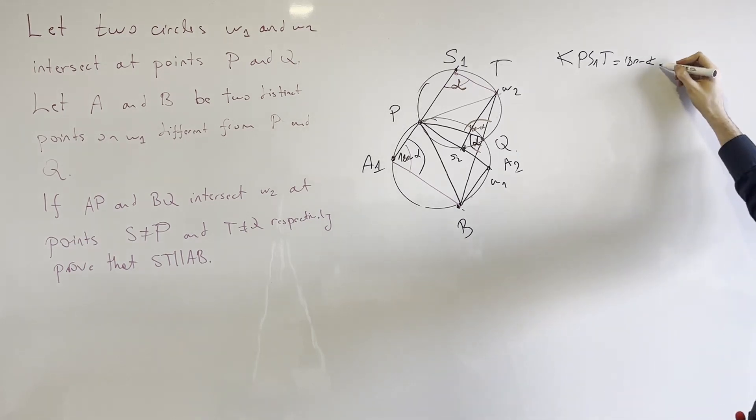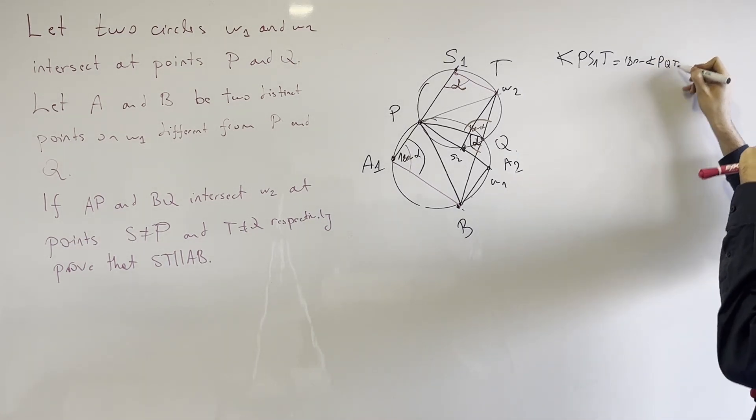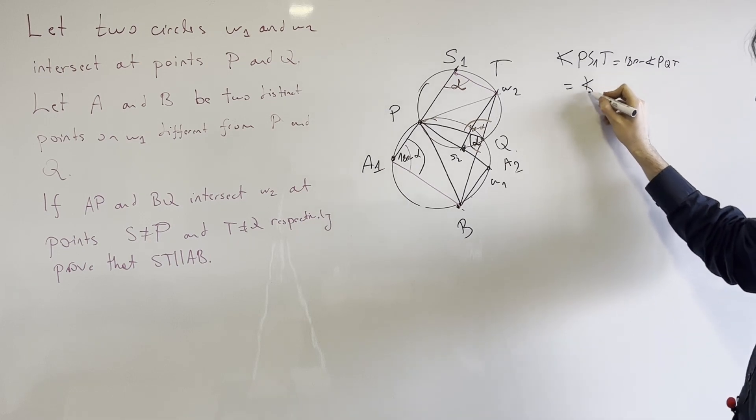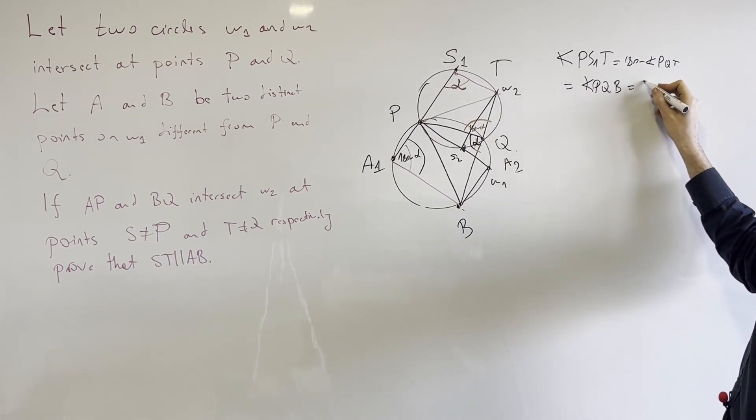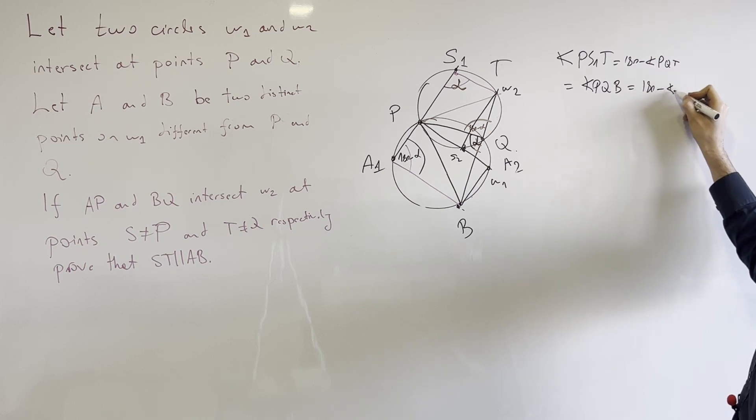So here we had, let's look at the angles. We had PS1T was equal to 180 minus the angle PQT, was equal to the angle PQB, which was then equal to 180 minus the angle PA1B.